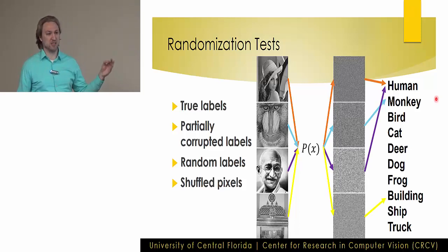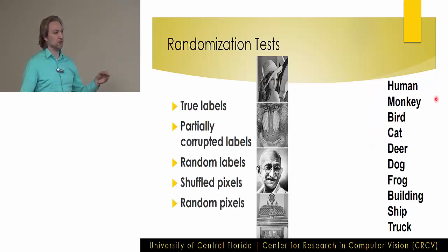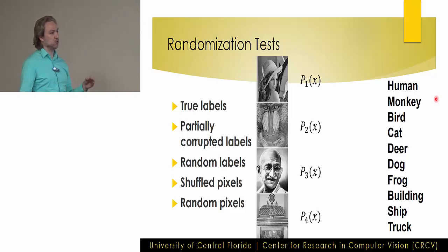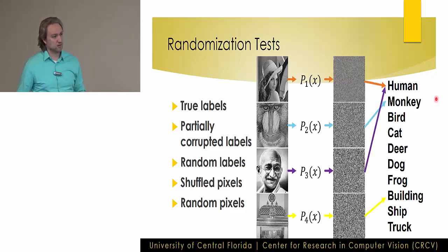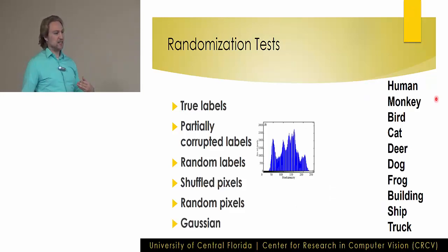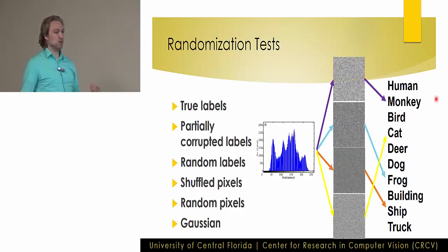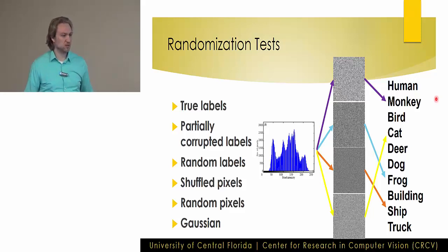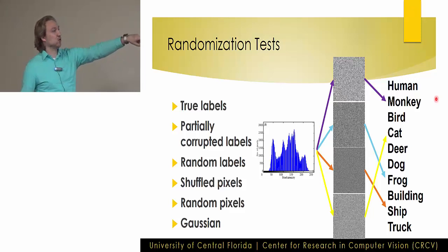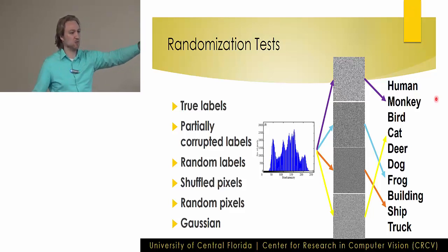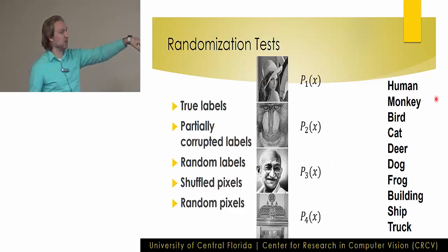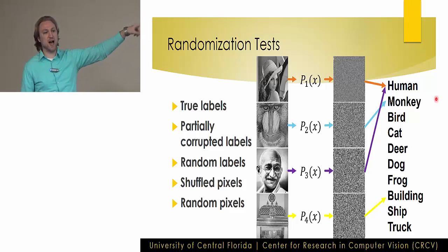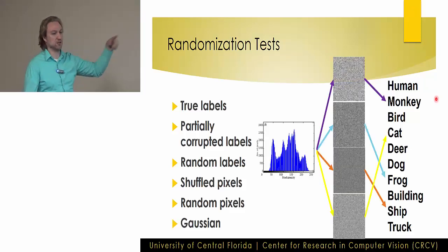Random pixels takes shuffling further: instead of one fixed permutation applied to all images, every image gets its own individual random permutation. Finally, they sample Gaussian noise drawn from a distribution with the same mean and standard deviation as the original dataset. These Gaussian samples look like random noise rather than recognizable images — they are drawn from the Gaussian distribution of the original dataset's pixel statistics.